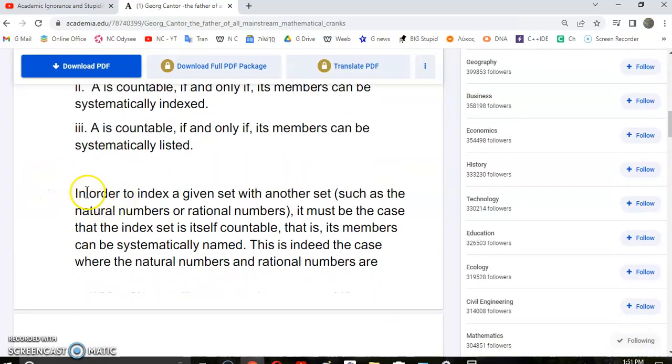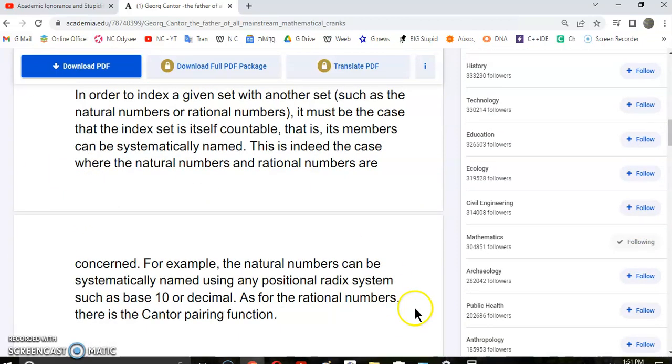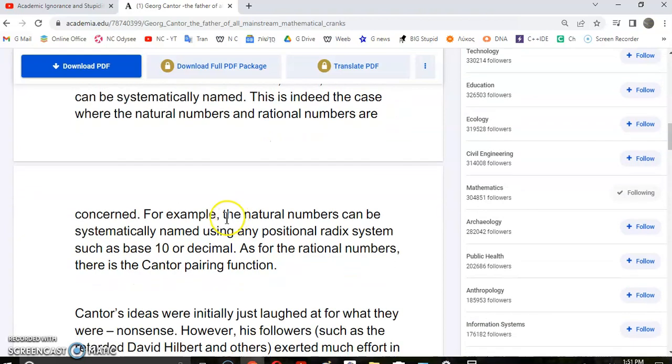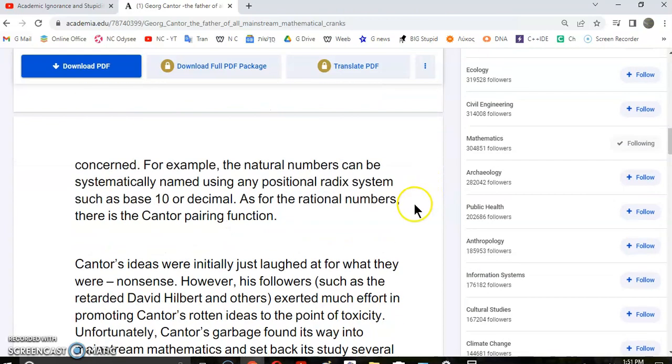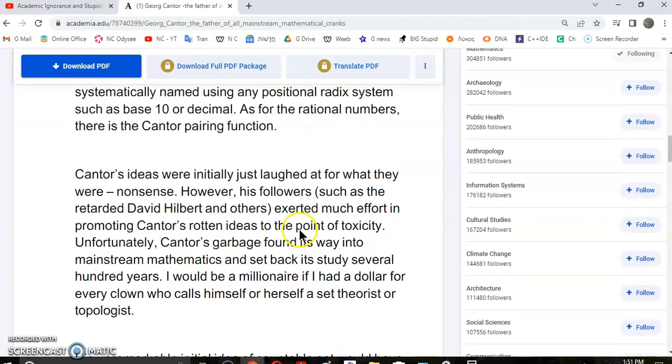In order to index a given set with another set, such as the natural numbers or rational numbers, it must be the case that the index set is itself countable - that is, its members can be systematically named. This is indeed the case where natural numbers and rational numbers are concerned. For example, the natural numbers can be systematically named using any positional radix system such as base 10 or decimal. As for the rational numbers, there is the Cantor pairing function.